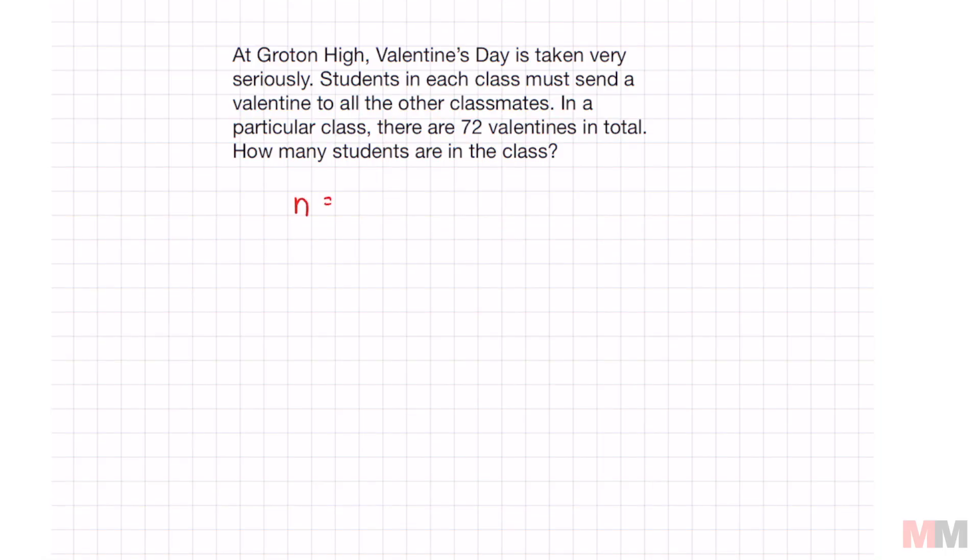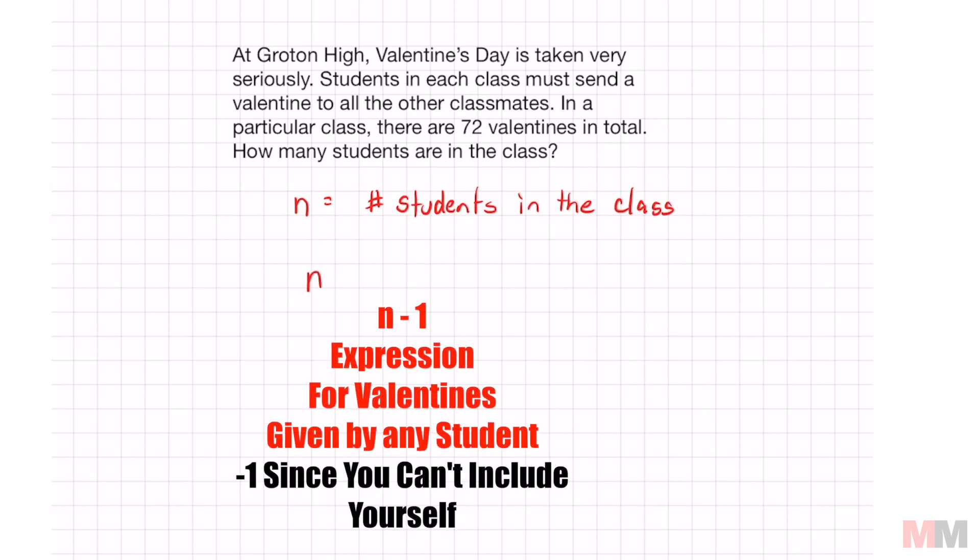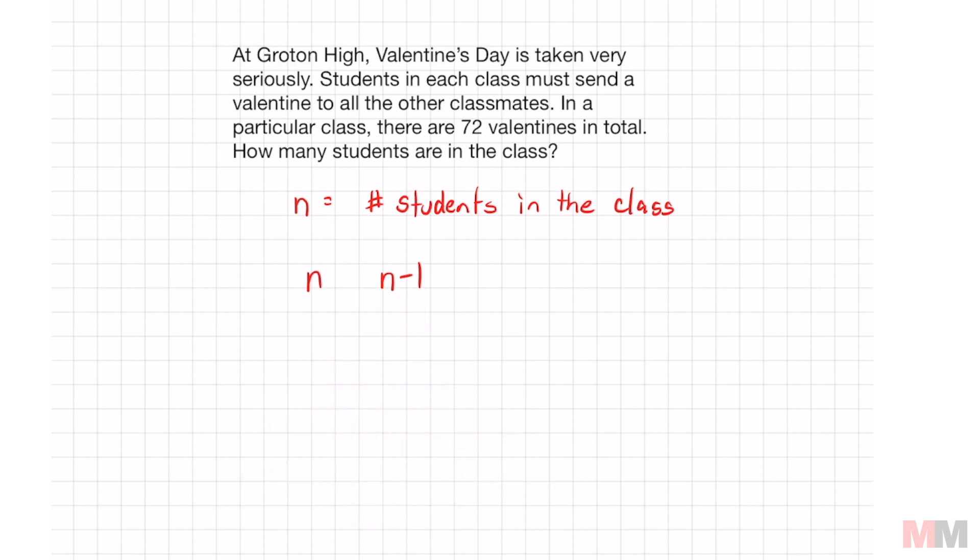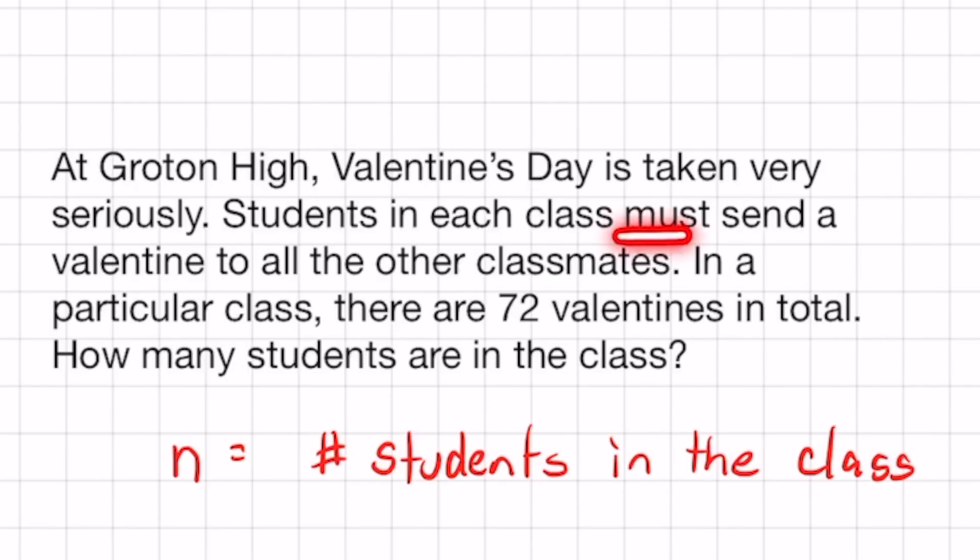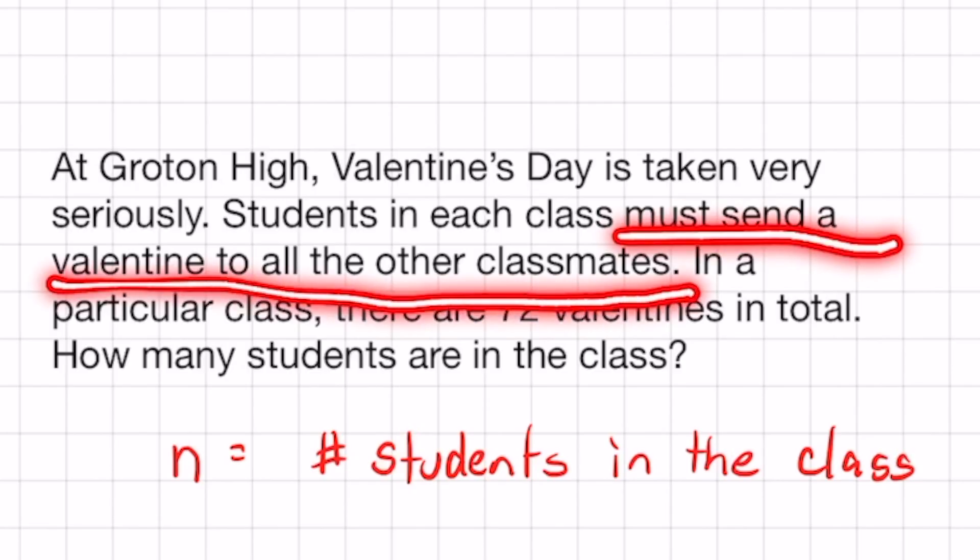Let's use n as the number of students in that particular class. To start our expression, we're going to use n, and we're going to represent n minus 1 as the amount of valentines given out. We have to subtract a 1 right here because you can't give a valentine to yourself, and it says it right here too. It says must send a valentine to all other classmates.